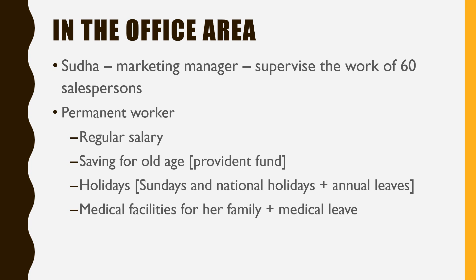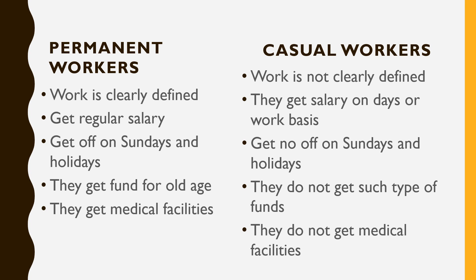Let's look at the difference between permanent workers and casual workers. For permanent workers, work is clearly defined — a supervisor supervises, a teacher teaches. But casual workers are unaware of what work they will be assigned; the person who hires them can ask for any kind of work. Permanent workers get regular salaries, while casual workers are hired on a daily or work basis. Permanent workers get Sundays and festival holidays off, but casual workers — if they don't work, they don't get paid.